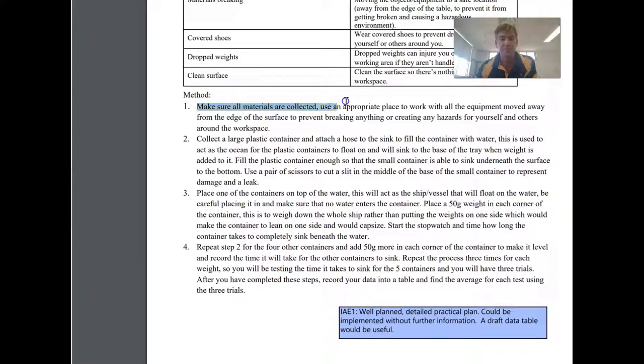So what they've gone through with and done with the method is justified the method. They haven't just gone step one, make sure all materials are collected. They've make sure all materials are collected so that, in order to. And that level of detail means that they've actually considered what they've done far more than a student who has just step one, do this, step two, do this.